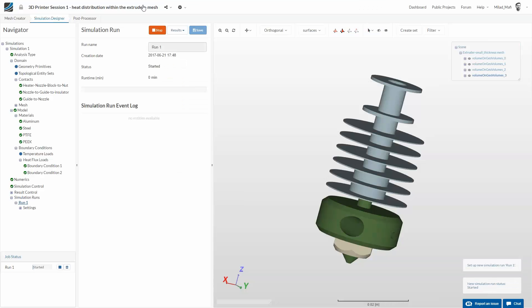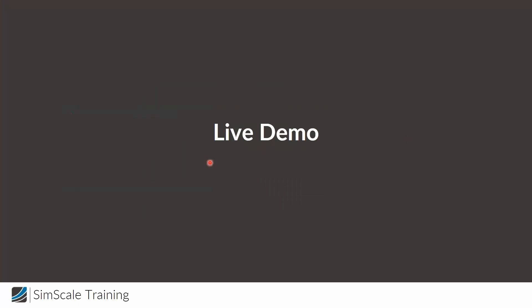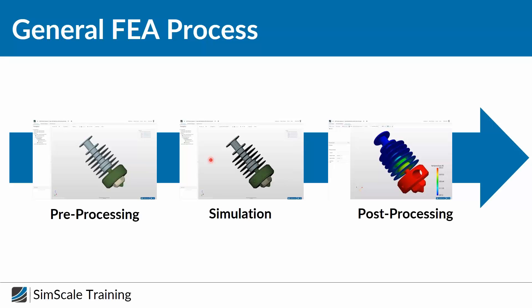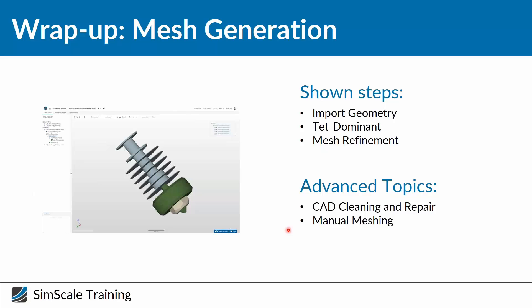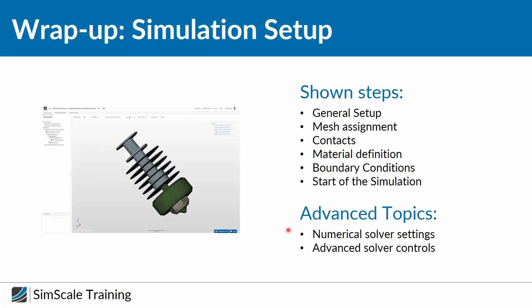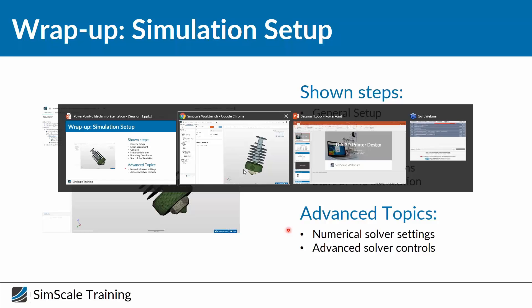Let's do a quick wrap-up before we look at the simulation results. Generally for FEA we had pre-processing — dividing the geometry into a mesh — then simulation setup, and now post-processing. Mesh generation was quite simple: a tet-dominant mesh with contact refinements. The simulation setup was more involved: choose general physics (heat transfer), assign the mesh, define contacts to describe interactions between parts, define materials and boundary conditions, then start the simulation. The simulation ran for about 20 minutes, so I have prepared a project with results already included.